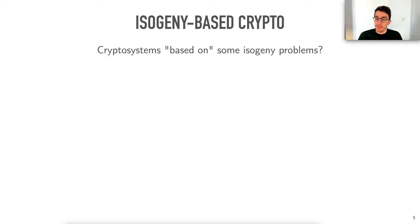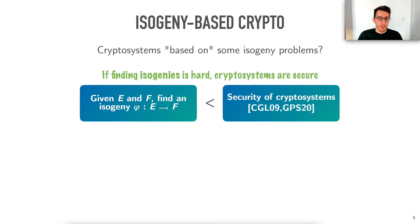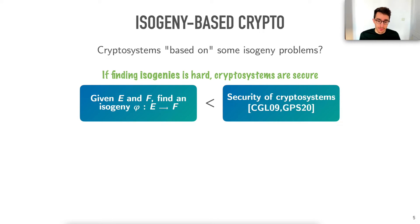What exactly does it mean to be based on an isogeny problem? Here's the isogeny finding problem: when you're given e and f, can you find an isogeny between e and f? You're just given the curves and asked to find an isogeny between them. You can construct cryptosystems that are secure as long as this isogeny finding problem is hard.